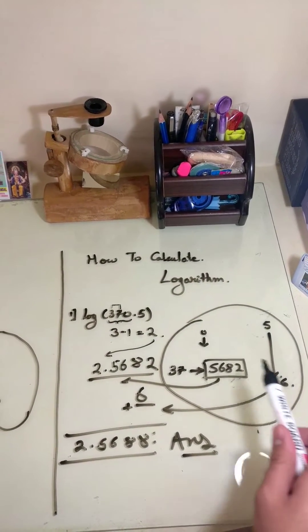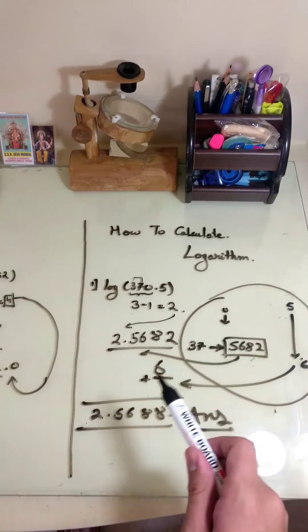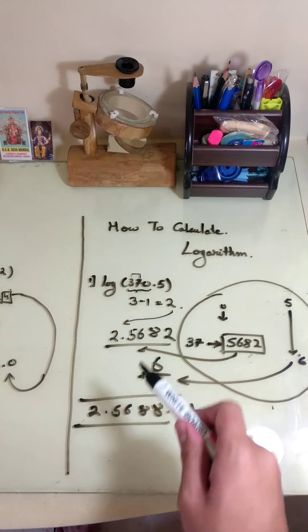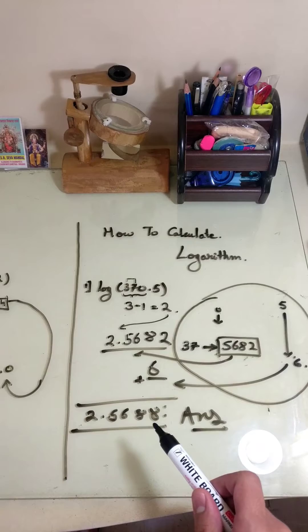So, we have to add 6 to this which gives us 2.5688 and this is the answer.